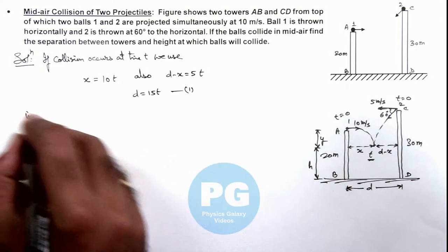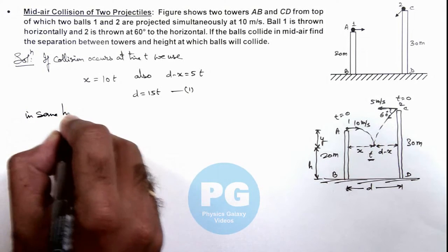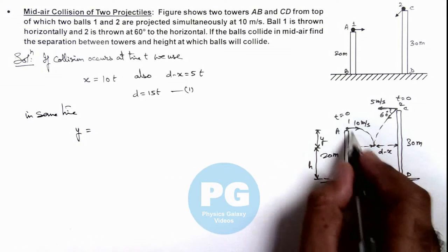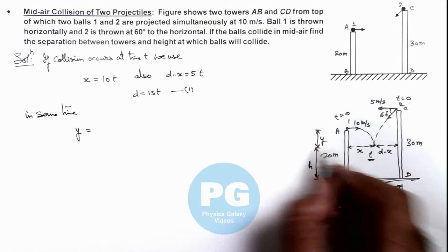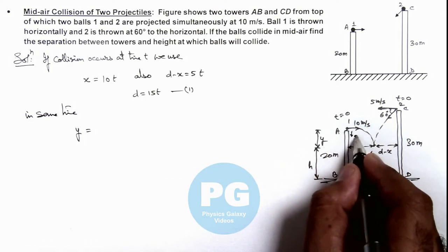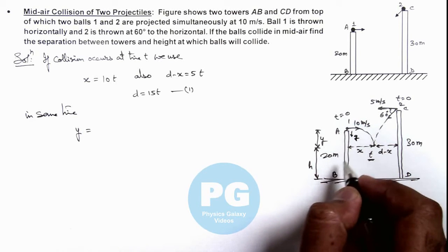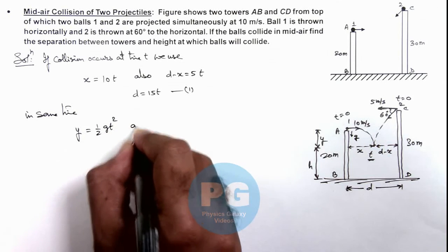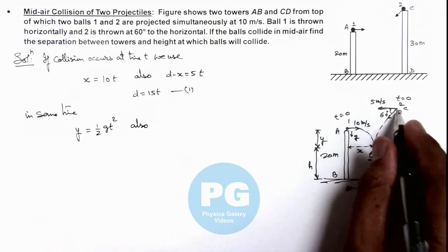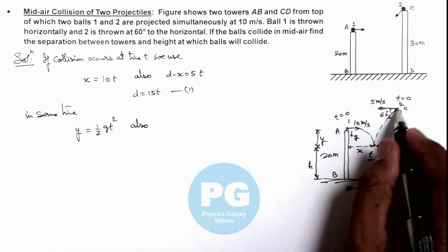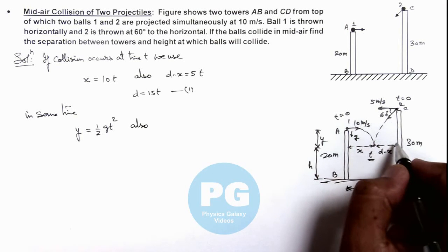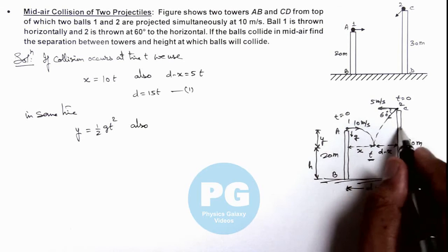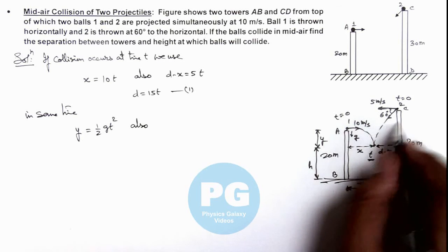In the same time, we can use the vertical displacement of ball 1 which is y. As it is falling with the downward acceleration g, then in time t we can write y as half g t squared. Also we can use for the other projectile, for ball 2, the vertical displacement here will be y plus 10, as point C is 10 meters vertically above point A.